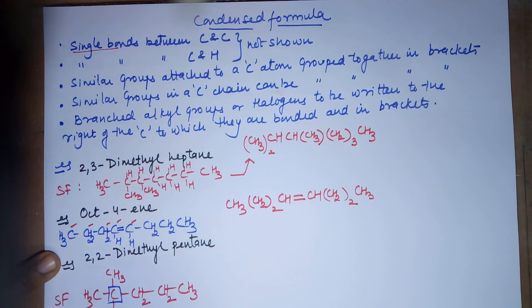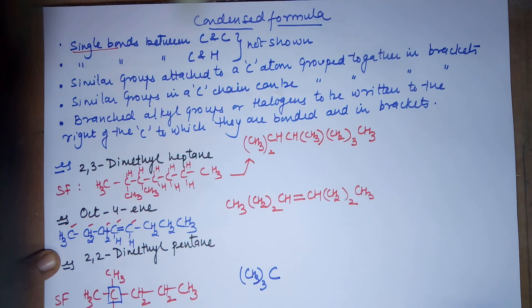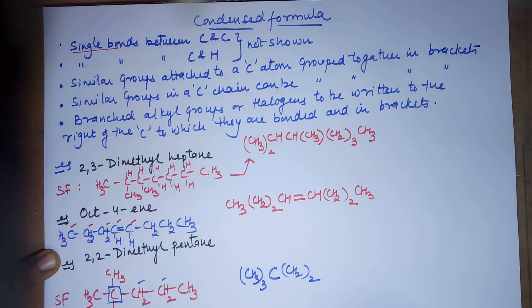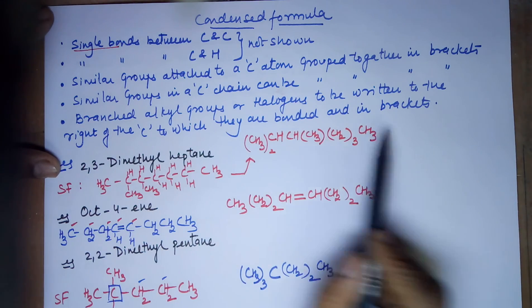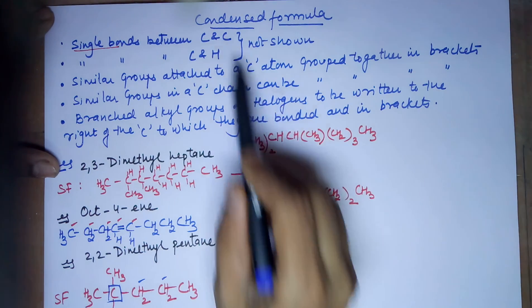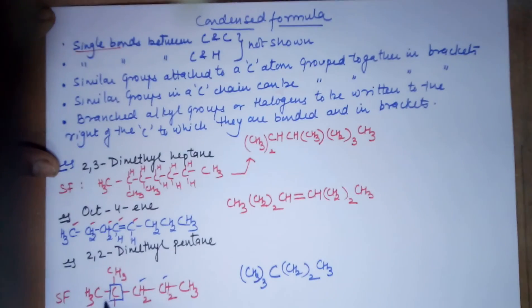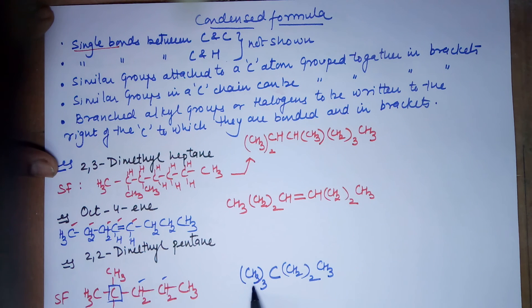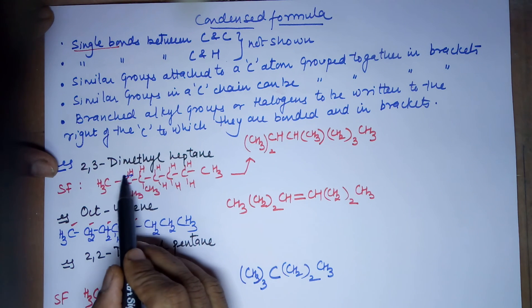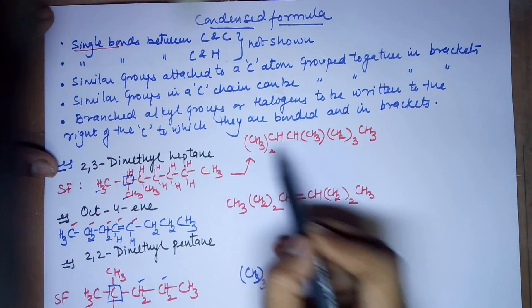This is the structural formula of the compound. For the condensed formula: this particular carbon has three similar groups — two methyls and the chain CH3 — so you can write these as (CH3)3C. Then finally you have (CH2)2 after this, and then a CH3. No single bonds between carbons or between carbon and hydrogen are shown. This particular carbon has three methyls grouped together in a bracket, and this particular carbon has two methyls grouped together in a bracket.